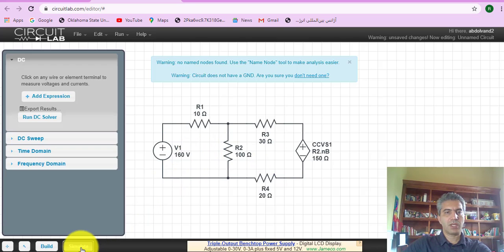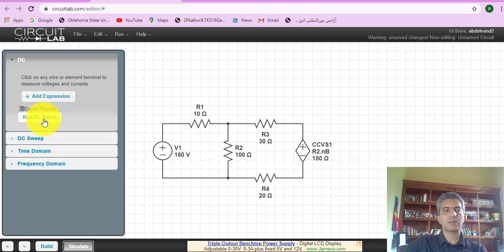So next we go to simulate and then run DC solver. DC means that everything is constant. DC stands for direct current. So everything is constant, everything is in the same direction. It doesn't change direction. So it's DC, direct current or directional current.